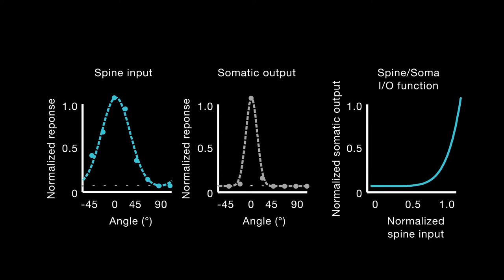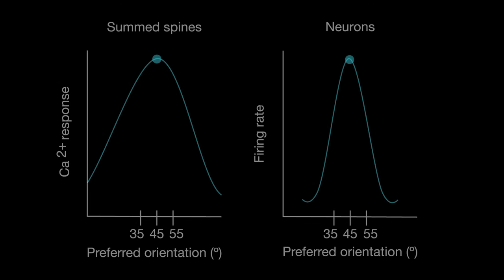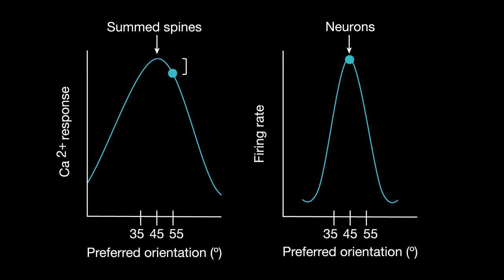In the most extreme cases, this filtering allowed neurons to be even more selective than the sum of their individual inputs. For example, while both the neuron and the spines might prefer 45 degrees, the calcium response from all of its spines might drop only slightly between 45 and 55 degrees, whereas the neuron's firing rate would fall drastically.